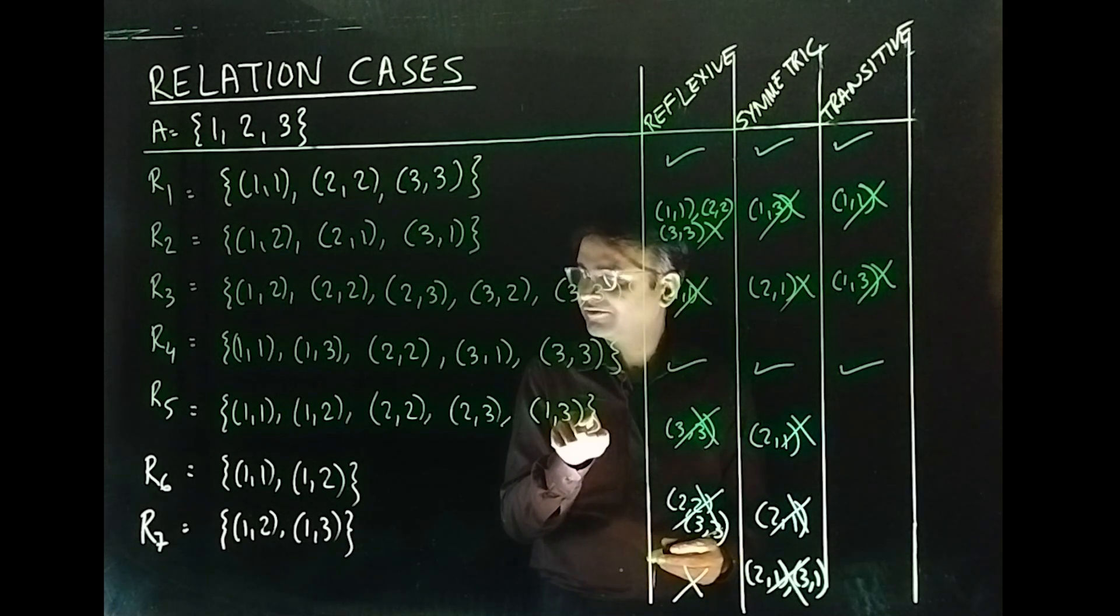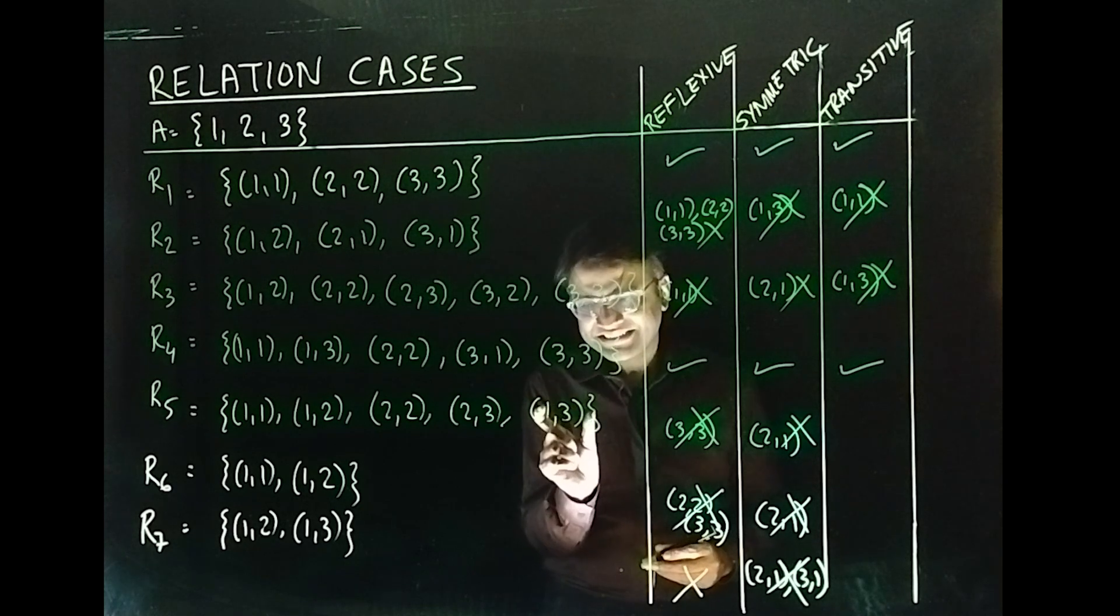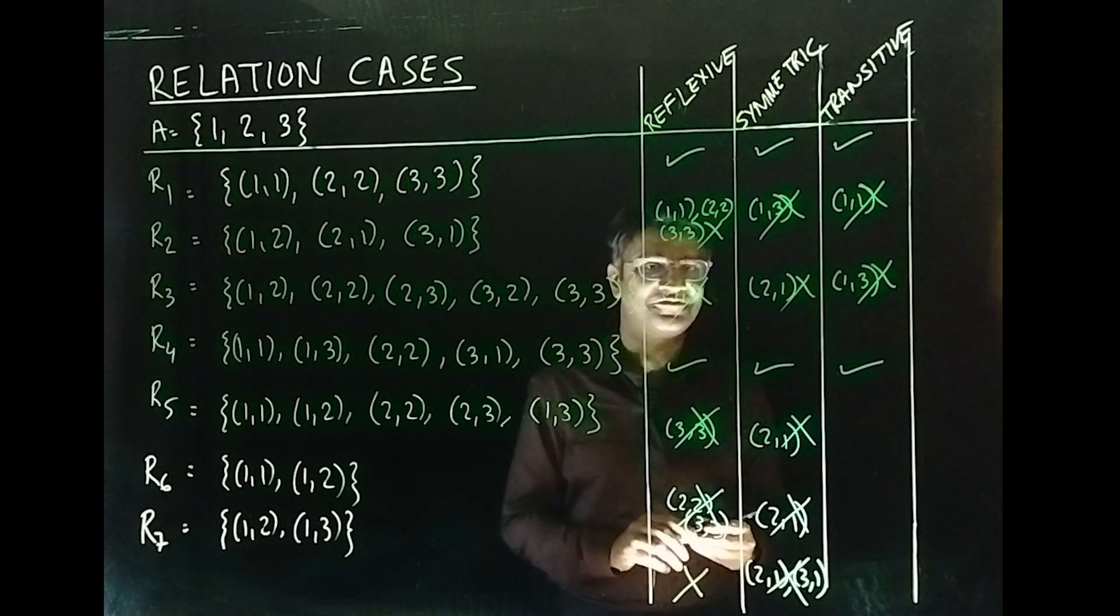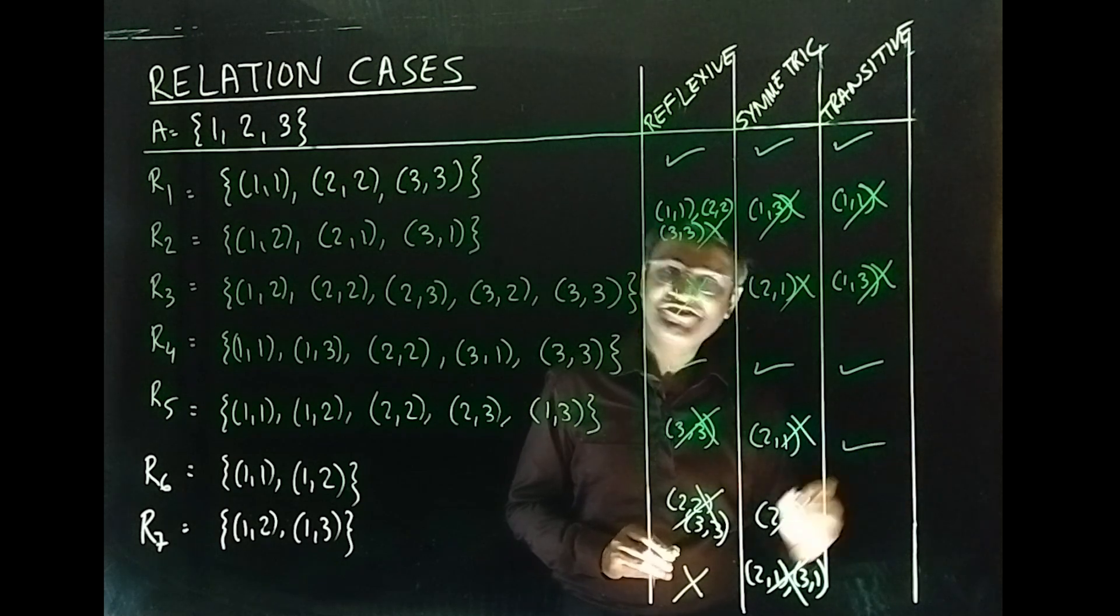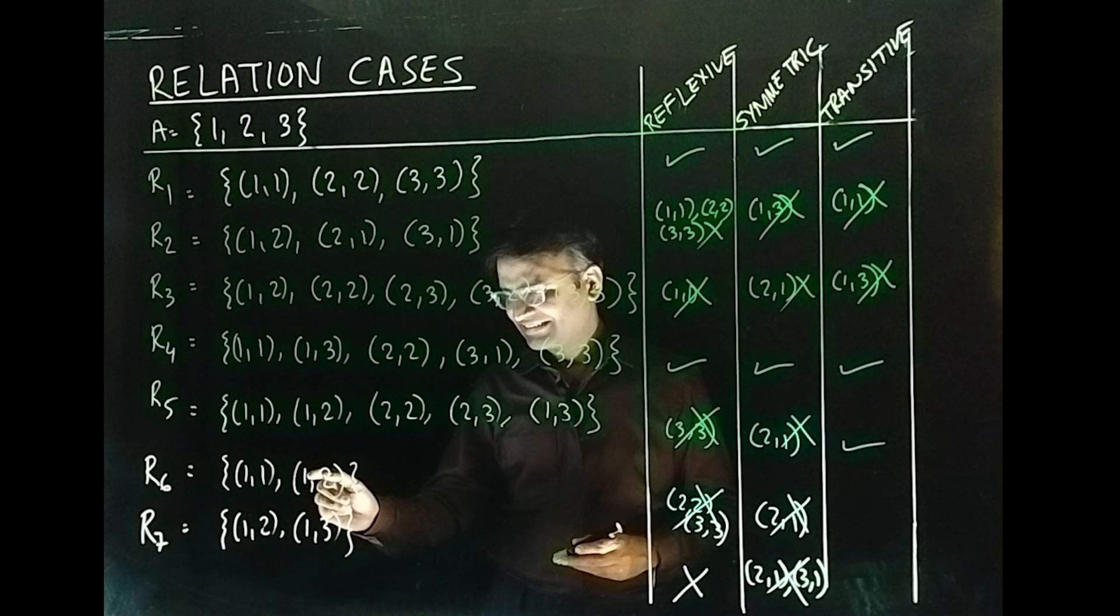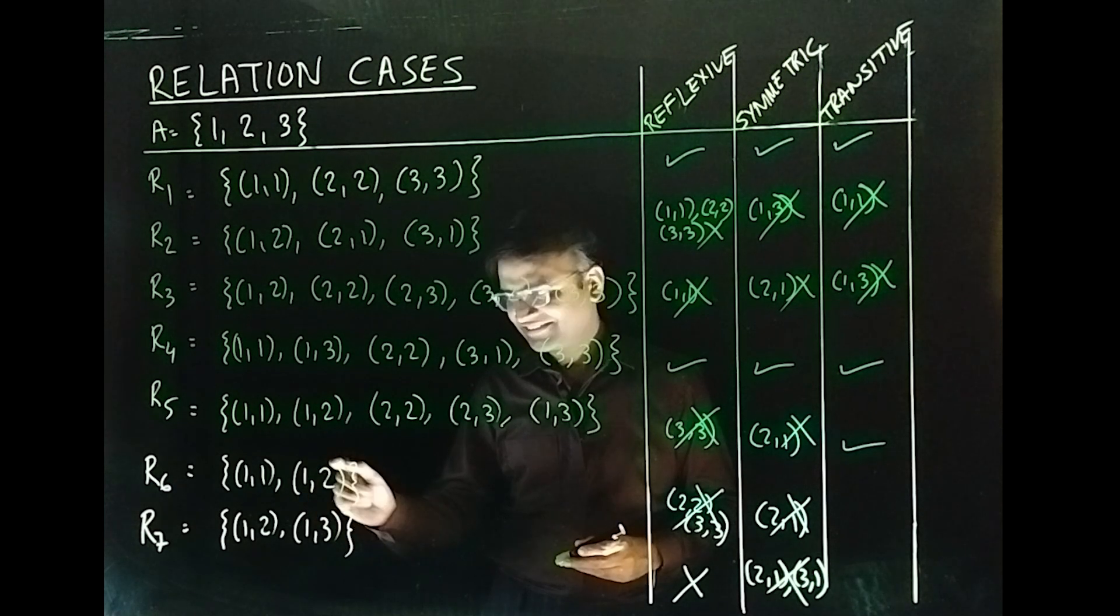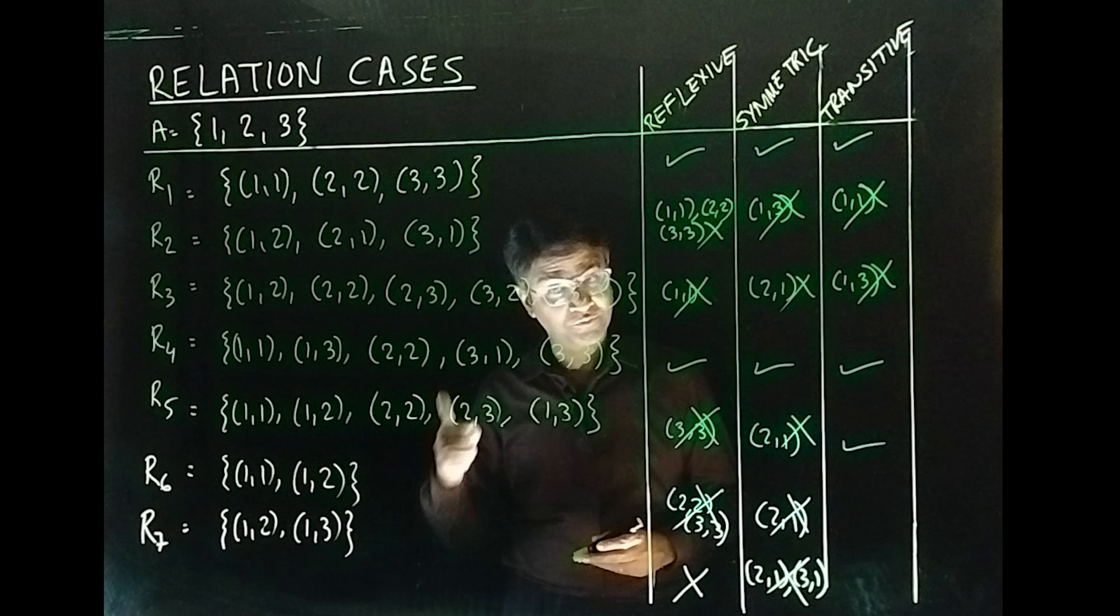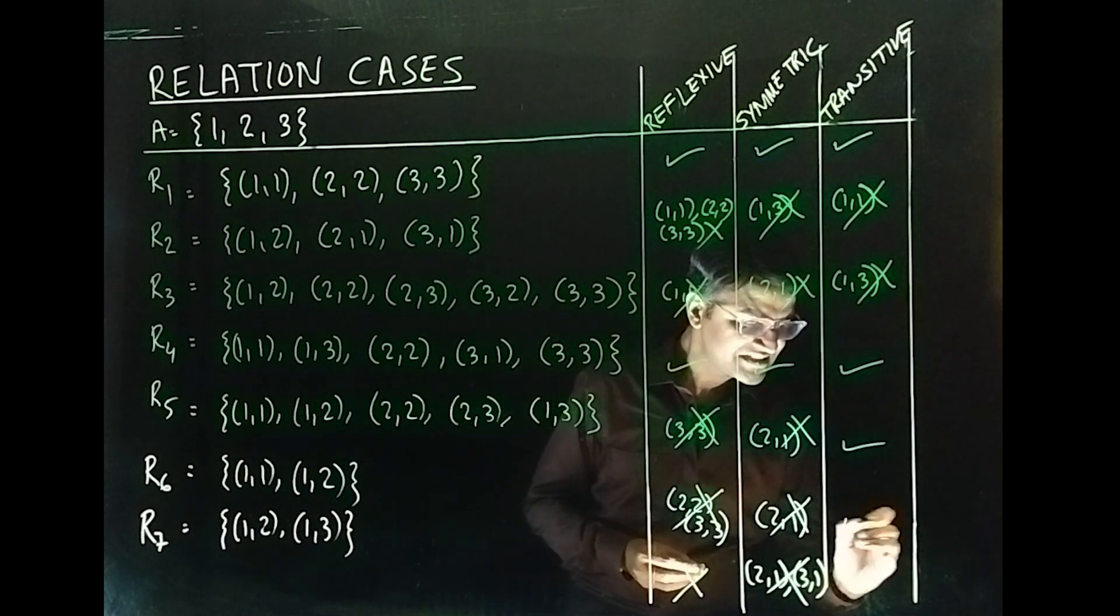How about R₆? You have first-second, second-third, first-third (1,1), (1,2) again (1,2) yeah this is transitive.